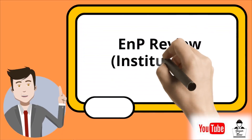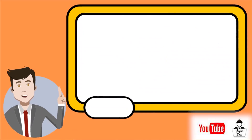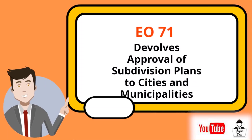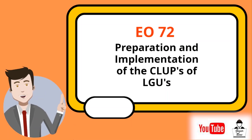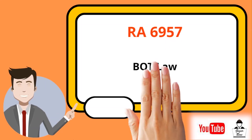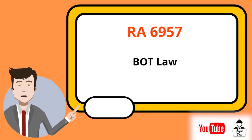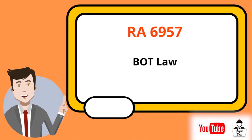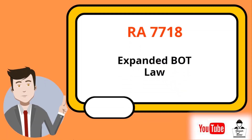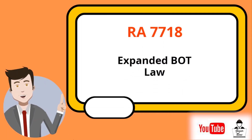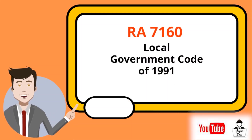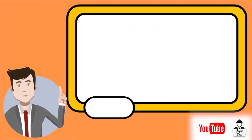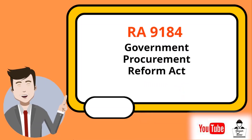ENP Review related to the Institutional Sector: E.O. 71, which devolves approval of subdivision plans to cities and municipalities; E.O. 72, preparation and implementation of the CLUP of LGUs; R.A. 6957, the BOT Law; R.A. 7718, the Expanded BOT Law; R.A. 7160, the Local Government Code of 1991; and R.A. 9184, the Government Procurement Reform Act.